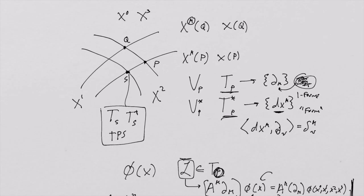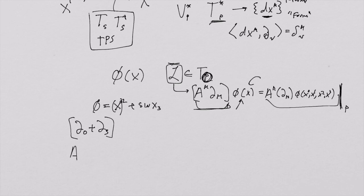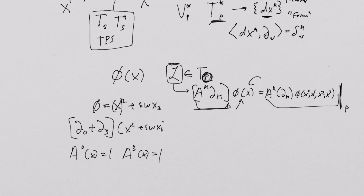We're going to talk about a vector field that looks like partial-0 plus partial-3—that'll be the vector field with constant coefficients throughout all of space-time. That means a0 of x just equals 1 everywhere, and a3 of spacetime equals 1 everywhere. Those two vector field functions are constant, and then we simply apply that to x0-squared plus sine x3, and the derivative is going to be 2x0 plus cosine x3.